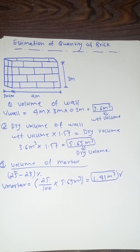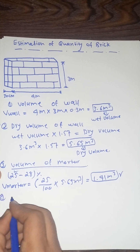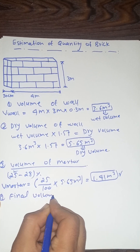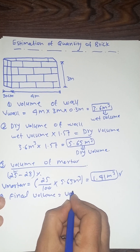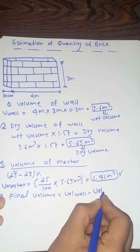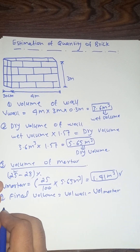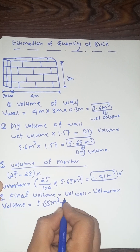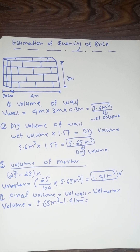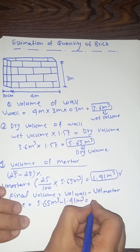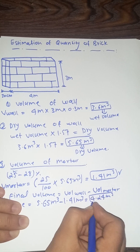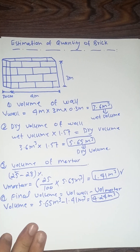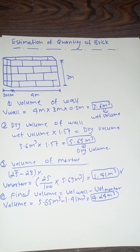Now we have to subtract the volume of mortar from the volume of the wall. Our final volume will be the volume of wall minus the volume of mortar: 5.65 m³ minus 1.41 m³ equals 4.24 cubic meters. This is our final volume.